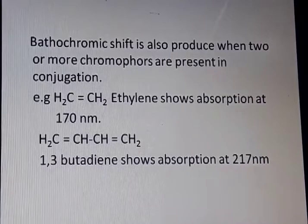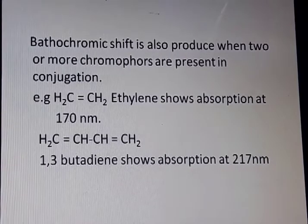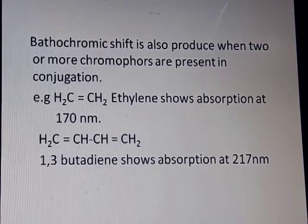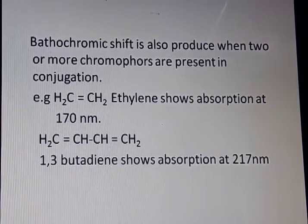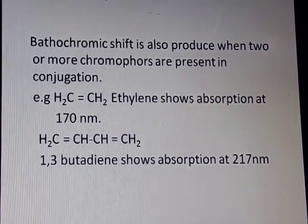Bathochromic shift is also produced when two or more chromophores are present in conjugation. For example, ethylene shows lambda max at 170 nm, while 1,3-butadiene shows absorption at 217 nm.